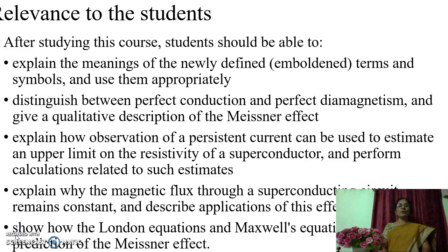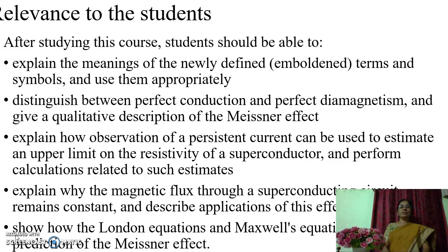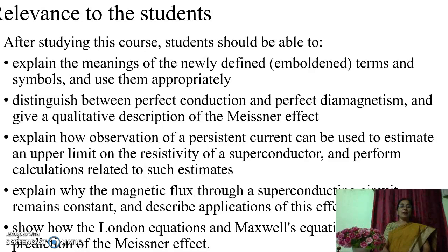After studying this course, students will be able to explain the meanings of newly defined terms and symbols and use them appropriately. They will be able to distinguish between perfect conduction and perfect diamagnetism and give a qualitative description of the Meissner effect. They will also be able to explain how observation of a persistent current can be used to estimate an upper limit on the resistivity of a superconductor and perform calculations related to such estimates.